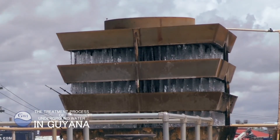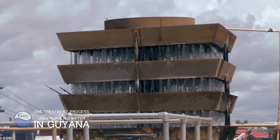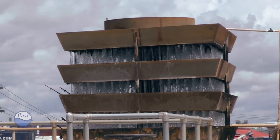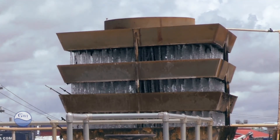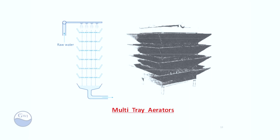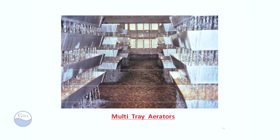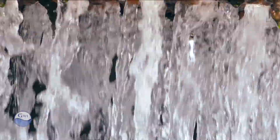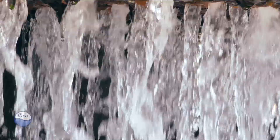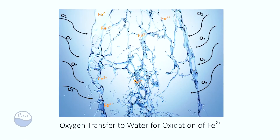The multiple tray aerator entails the exposure of the water in thin films, created as it flows through the various trays, which allows for oxidation or transfer of the ferrous, also known as clear water iron, to the insoluble or ferric iron, which then precipitates to the iron hydroxide, which can be physically removed.